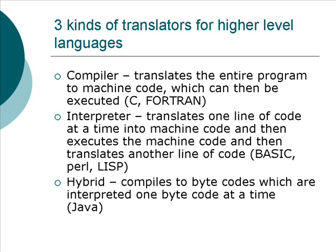An interpreter, on the other hand, you translate and execute one line at a time: translate, execute, translate, execute. And a hybrid translates everything to what are called byte codes, which are then interpreted one byte code at a time.